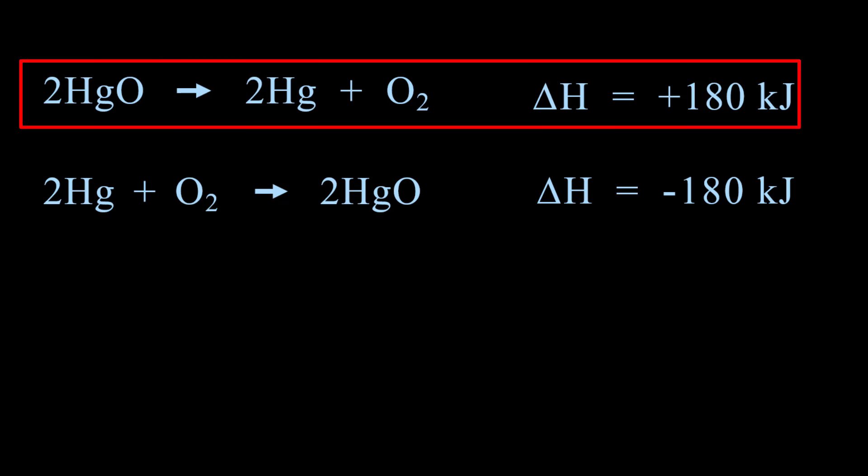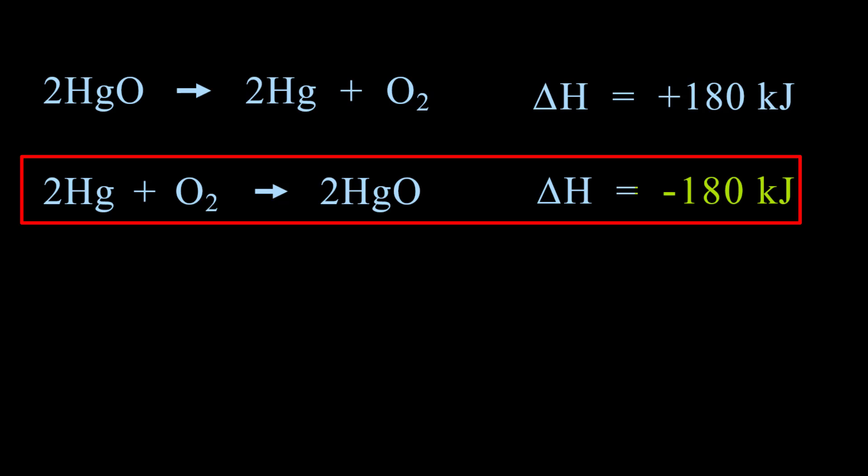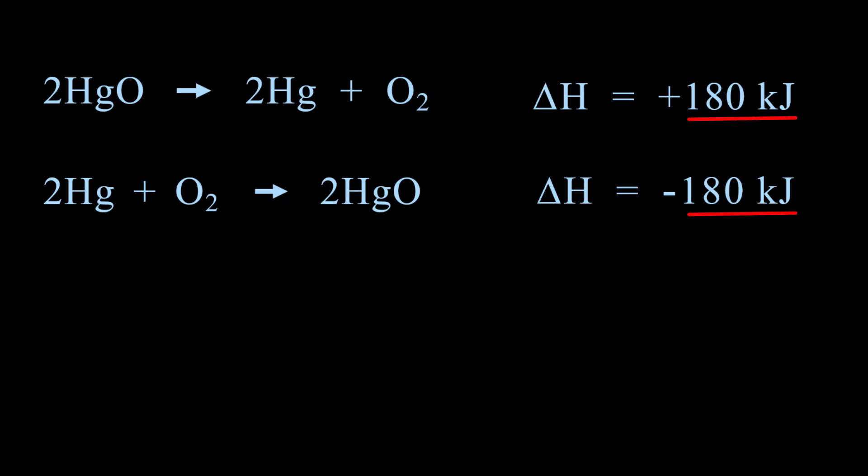So the decomposition of mercury oxide requires the addition of 180 kJ to decompose, while the synthesis of HgO releases 180 kJ. The process is the same, just going in the opposite direction, and so its energy change is the same, but also going in the opposite direction. The gain of 180 kJ versus the loss of 180 kJ.